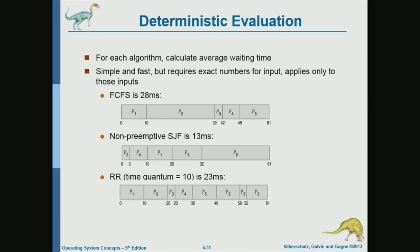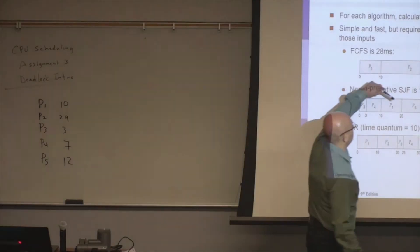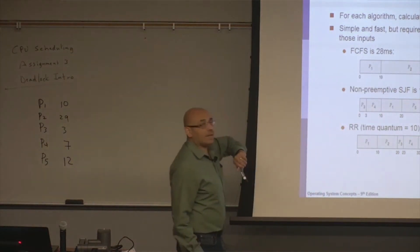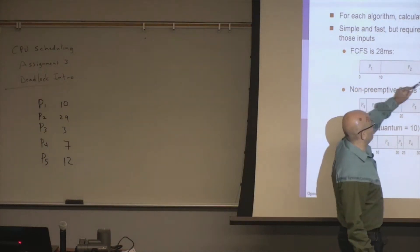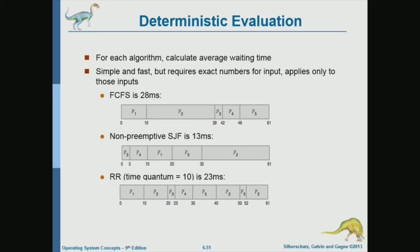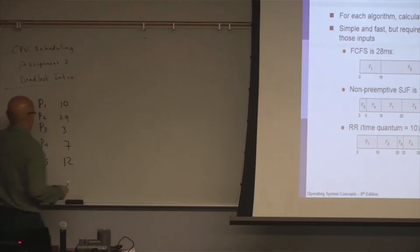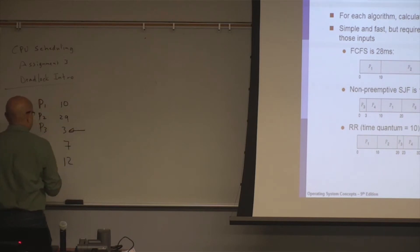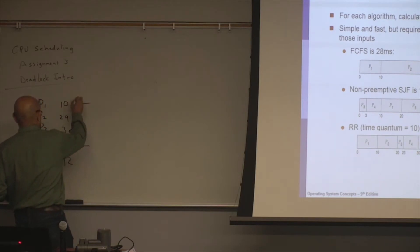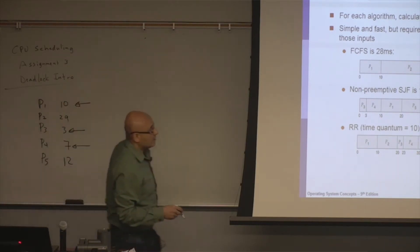First come first served is straightforward — you just schedule them in order, and calculating the average waiting time is straightforward. The waiting time for P2 is 10, and for P3 is 39. For non-preemptive shortest job first, we order by CPU burst length: P3 first, then P4, then P1, then P5, then P2.